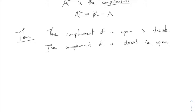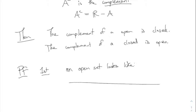The complement of an open set is closed, and the complement of a closed set is open. The first one is fairly easy to see in pictures. An open set always looks like a union of open intervals — maybe just one open interval, or maybe a bunch of different open intervals. That's what an open set looks like; there could be infinitely many of them.